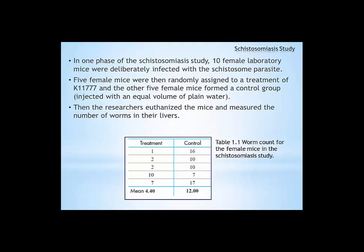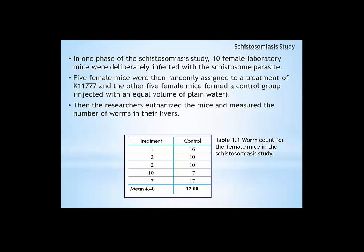In one phase of this study, 10 female lab mice were deliberately infected with the schistosom parasite. Five mice were randomly assigned to a treatment group and the other five were put into a control group. After they were infected, five mice were given the treatment injected daily for several days while the other five mice in the control group were injected with plain water. After several days, the researchers euthanized the mice and measured the number of worms in their livers. As you can see from the data below, the five mice that had the treatment had a much lower mean than the control group.